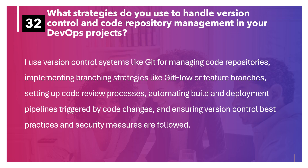What strategies do you use to handle version control and code repository management in your DevOps projects? I use version control systems like Git for managing code repositories, implementing branching strategies like Git Flow or feature branches, setting up code review processes, automating build and deployment pipelines triggered by code changes, and ensuring version control best practices and security measures are followed.